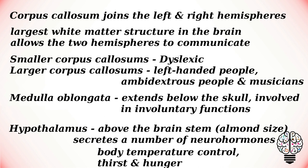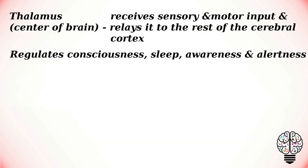The hypothalamus sits just above the brain stem and is roughly the size of an almond. It secretes a number of neurohormones and influences body temperature control, thirst, and hunger. Positioned in the center of the brain, the hypothalamus receives sensory and motor input and relates it to the rest of the cerebral cortex. It is involved in the regulation of consciousness, sleep, awareness, and alertness.